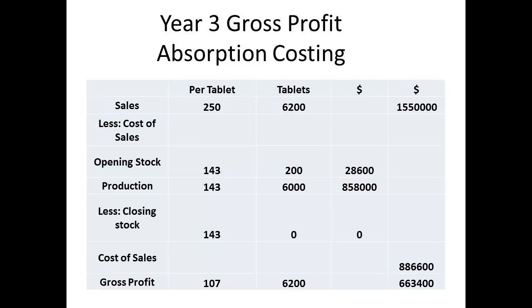In year 3, sales are 6,200 units, which leaves nothing for the closing inventory — all units have now been sold. Total sales are $1,550,000 and cost of sales is $886,600, which gives a figure for gross profit of $663,400.